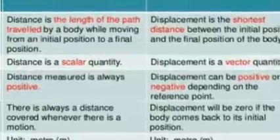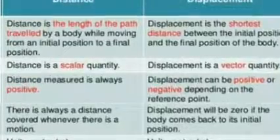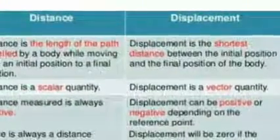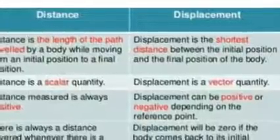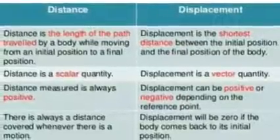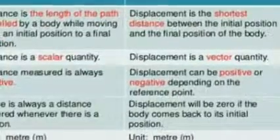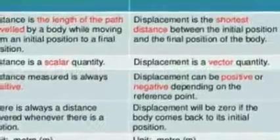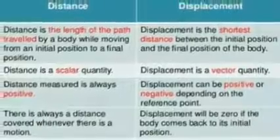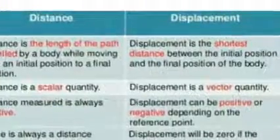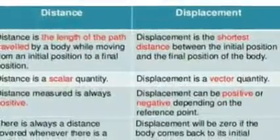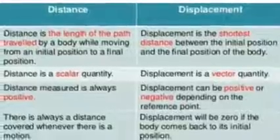Now we shall differentiate distance and displacement. Distance is the length of the path traveled by a body while moving from initial to final position; displacement is the shortest distance between initial and final position. Distance is a scalar; displacement is a vector. Distance measured is always positive; displacement can be positive or negative based on the reference point. There is always a distance covered whenever there is motion, but displacement can be zero if the object returns to its initial position. The SI unit of both distance and displacement is the meter.